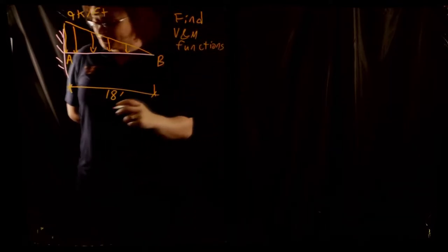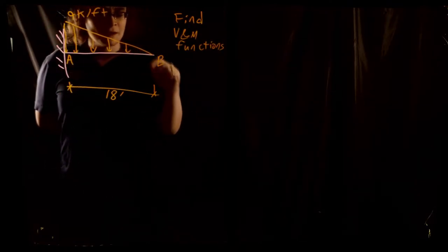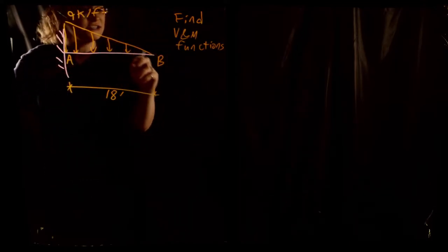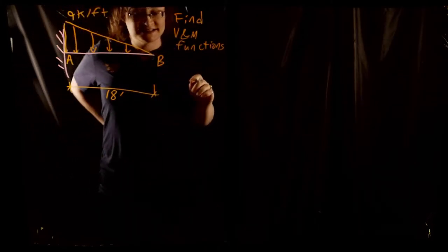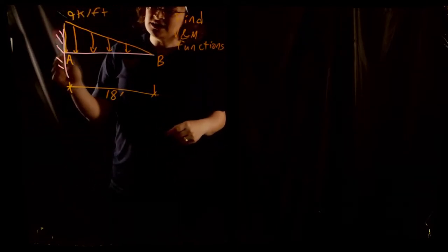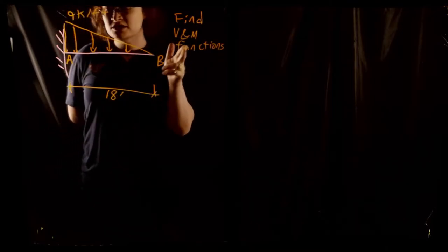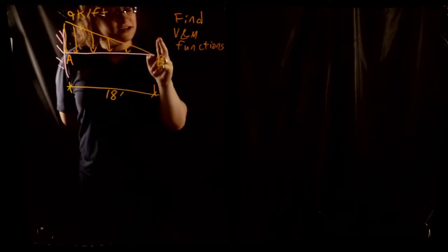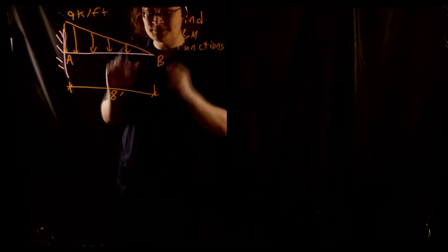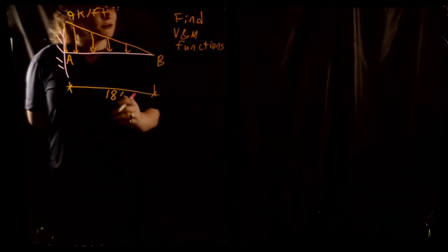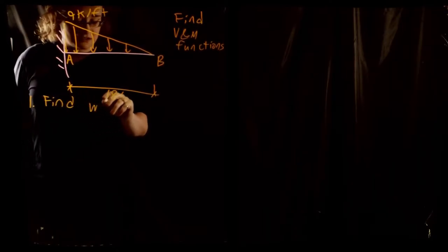Before applying integration we have two orders of business: get our reaction forces (useful for boundary conditions), and get our function for w as a function of x, our distributed load. Actually, for cantilevers we don't need to directly find the reactions — we can use the knowledge that shear and moment at the free end should be zero as our boundary conditions. So our first step is to find w(x), our load as a function of x.